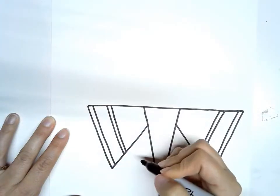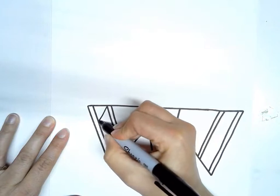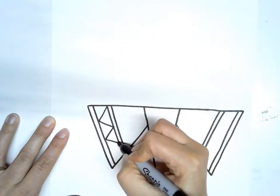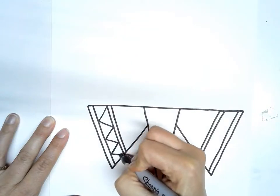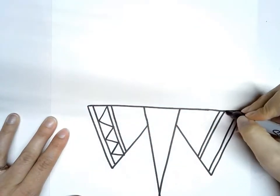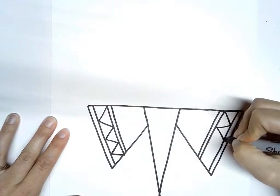Inside of these I'm going to be making some triangles. So I'm going to do kind of a zigzag pattern. Try to make them pretty even if you can. And the same thing on the other side. Again they're kind of like mirror images of each other.